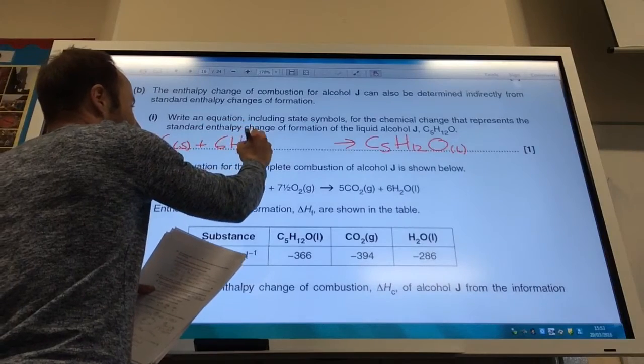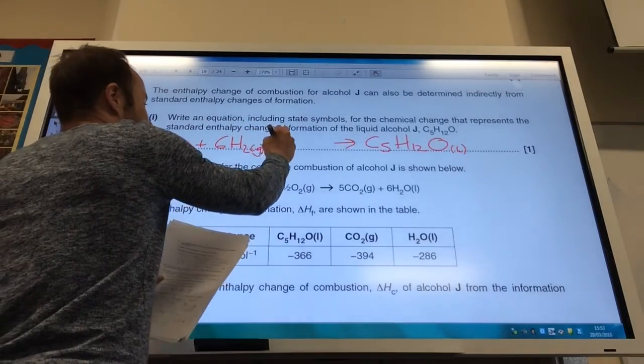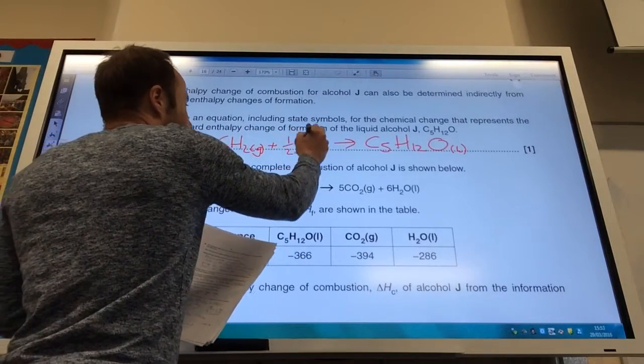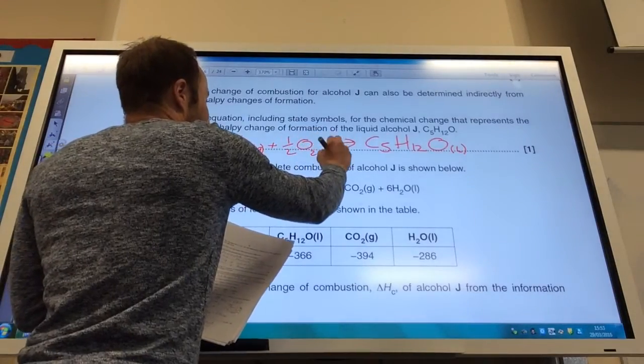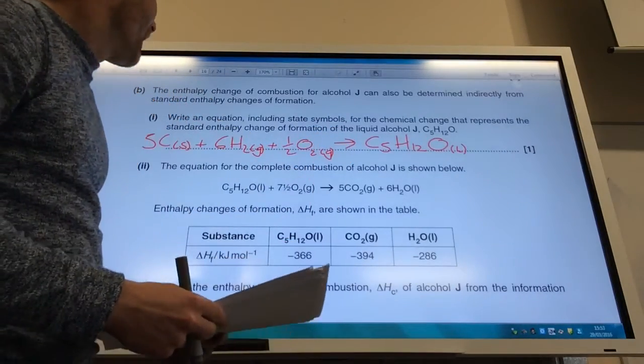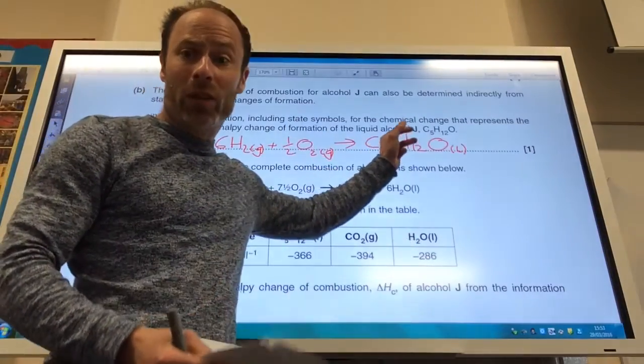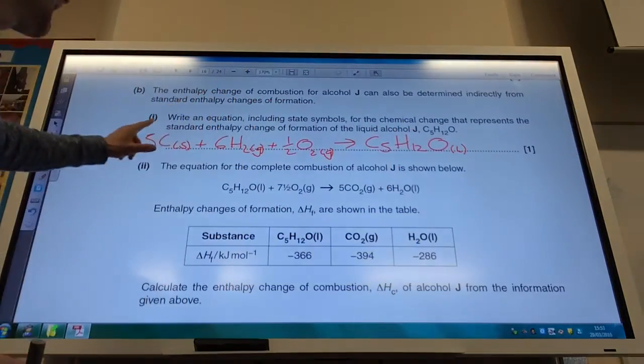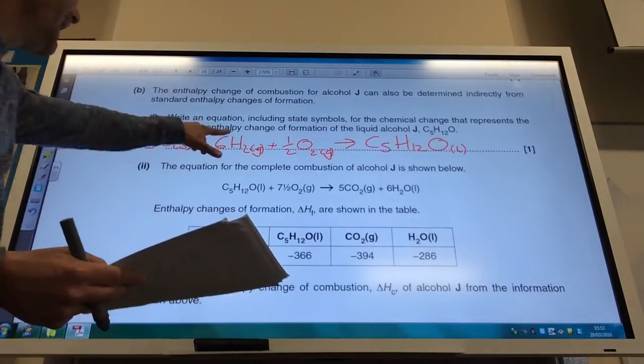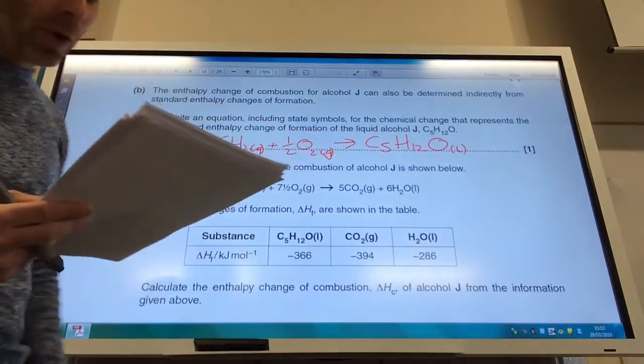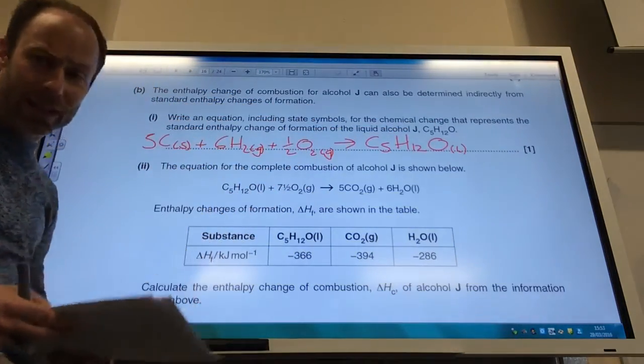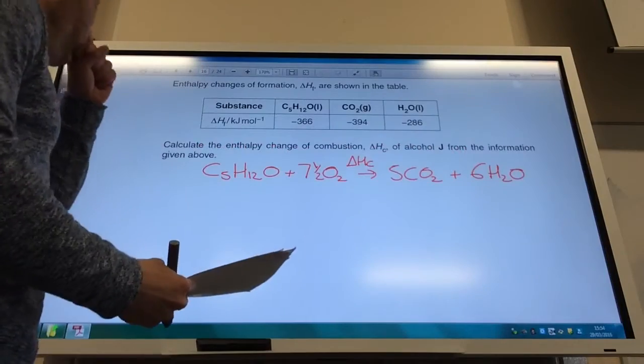So, in order to do that, I need to start with five carbons as a solid, six H2 as the standard state, and also a half O2 in the gaseous state as well. Remember, if it wants a formation, it's only got to be one mole of that. You can't make any more, so you've got to get these numbers to balance, making one mole of that, not forgetting your state symbols.